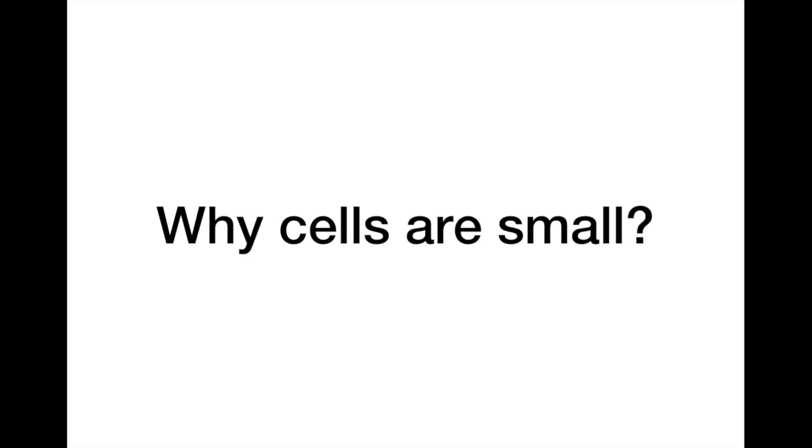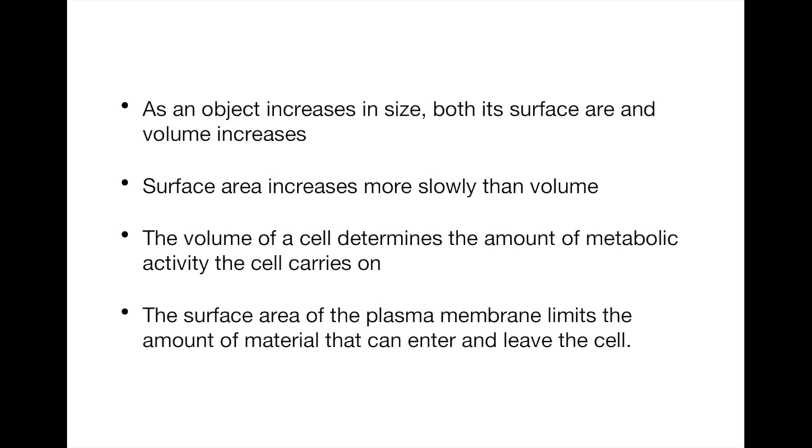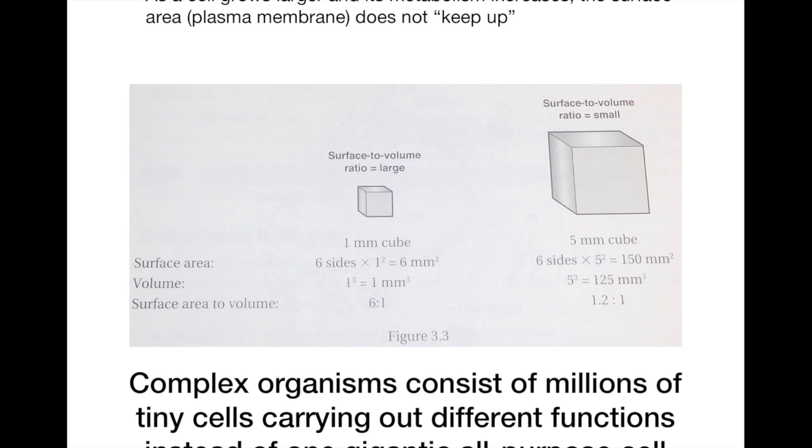Moving on, we're going to see why cells are small. Although various cells look different, they're all tiny. This is true because of surface area to volume ratio. When an object increases in size, both its surface area and volume increase. However, surface area increases more slowly than volume because surface area is a function of the square of the radius, while volume is a function of the cube of the radius.